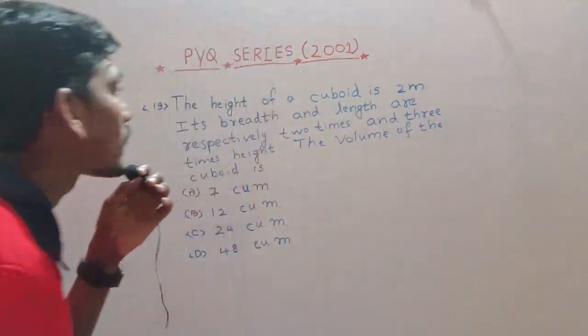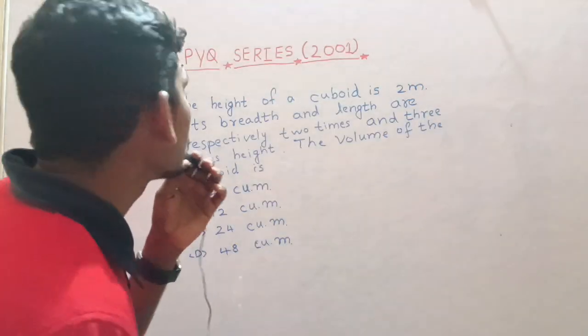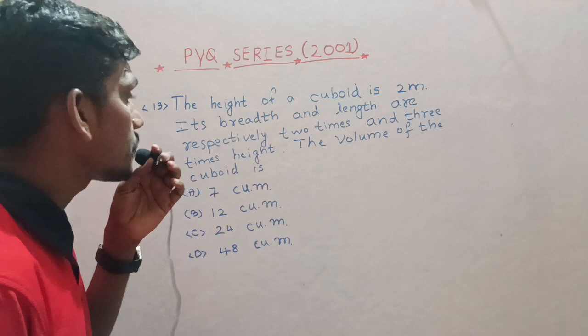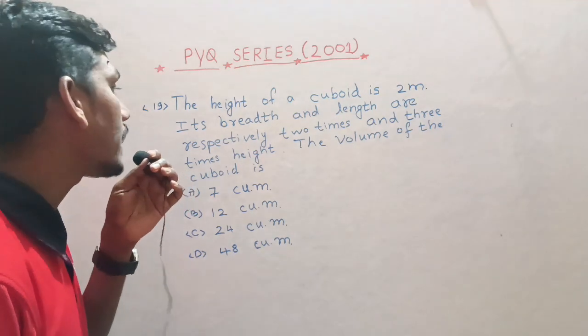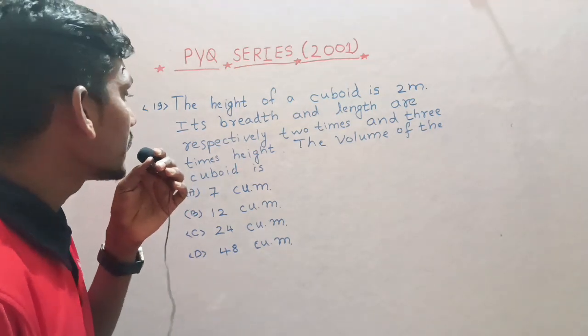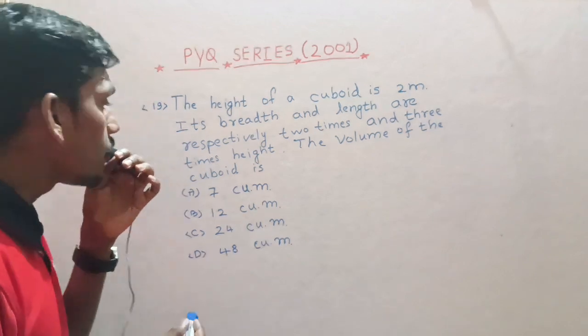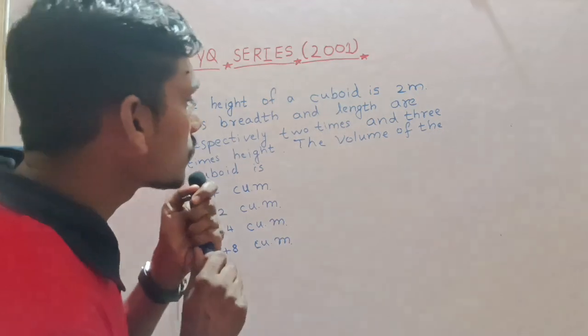Loading next question. The height of a cuboid is 2 meters. Its breadth and length are respectively two times and three times height. The volume of the cuboid is - volume of the cuboid, find.